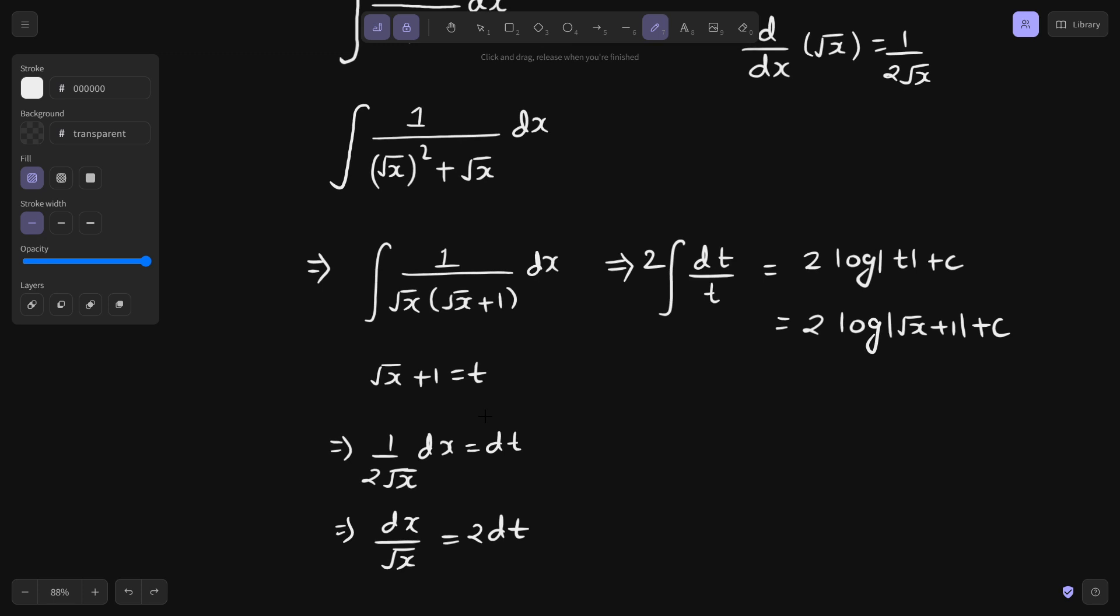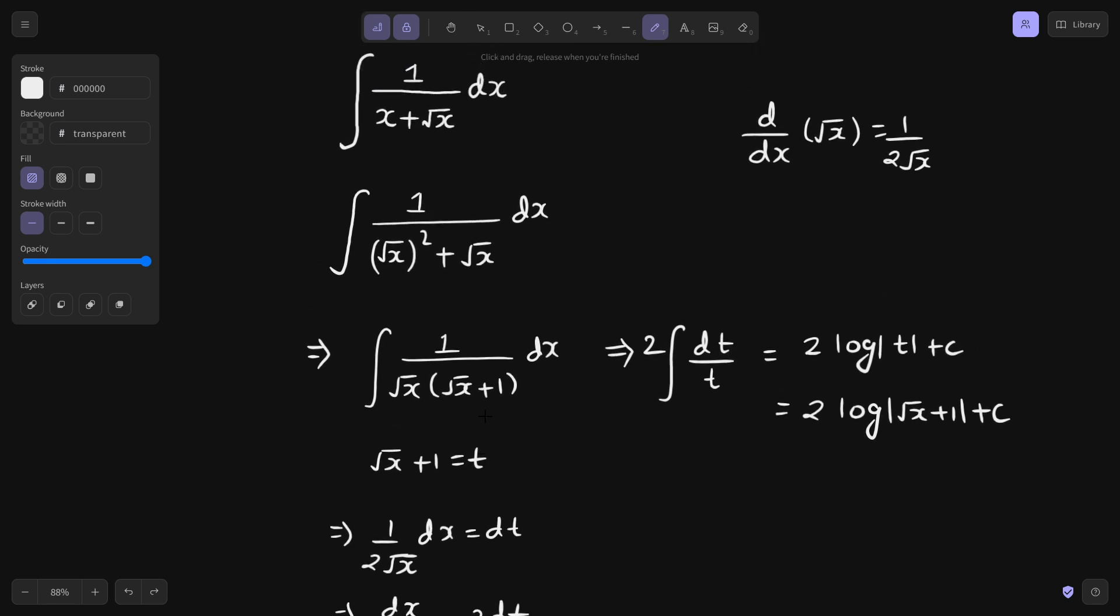As you can see, if you take root x out of the denominator you get a form where you can take root x plus 1 as t and you will visualize that the derivative is present there. Sometimes you need to simplify before taking a substitution and then you can apply the substitution.